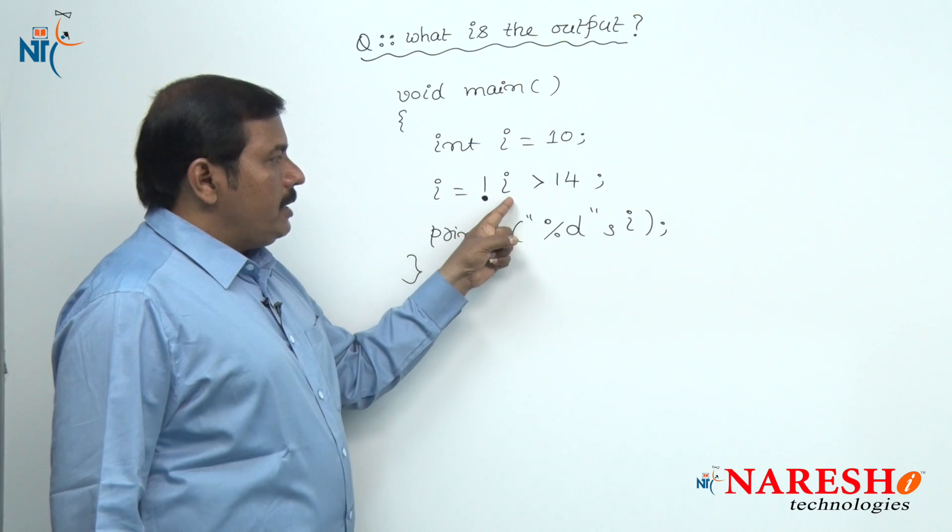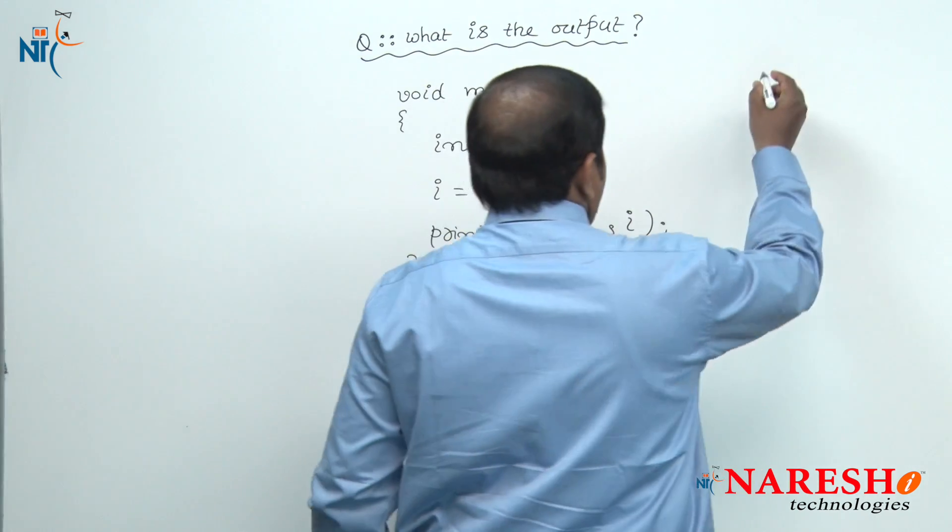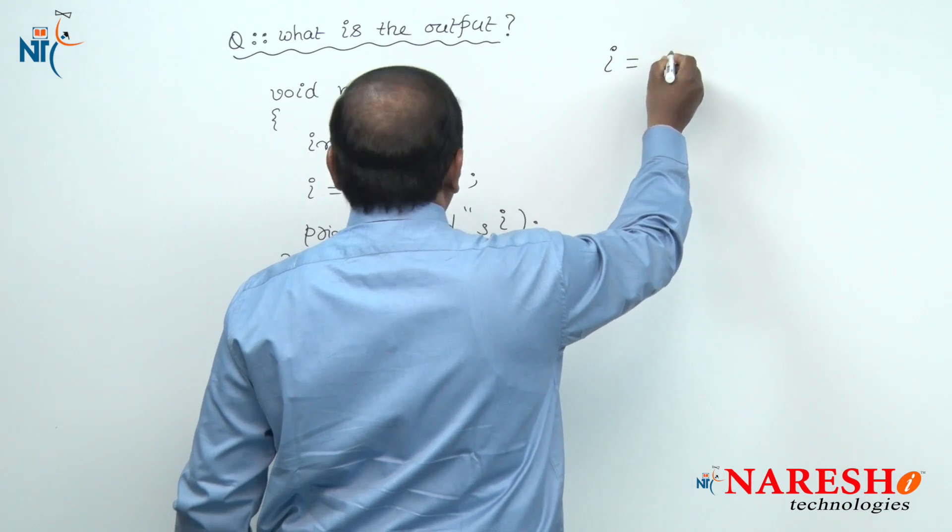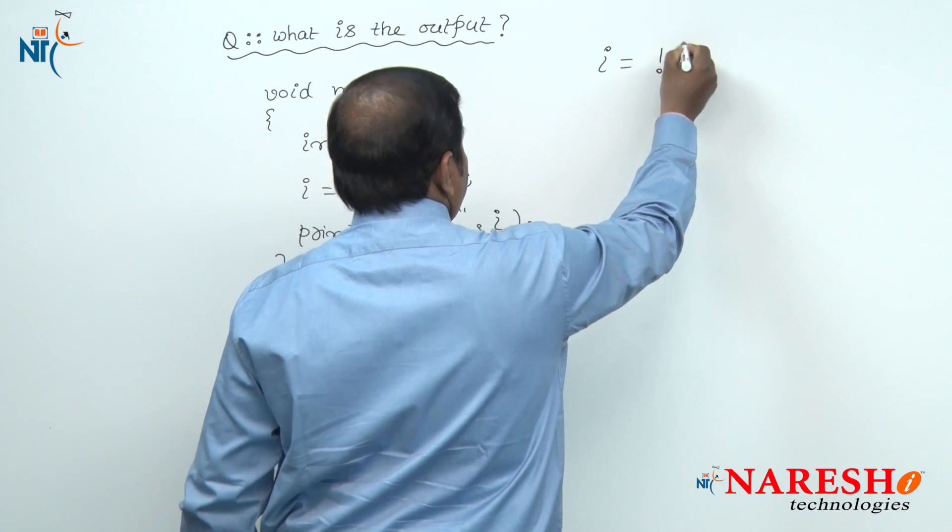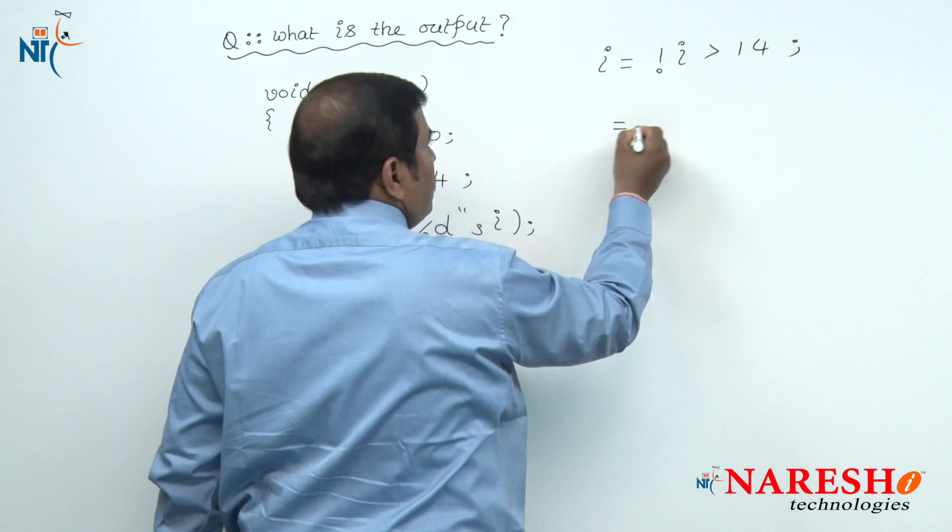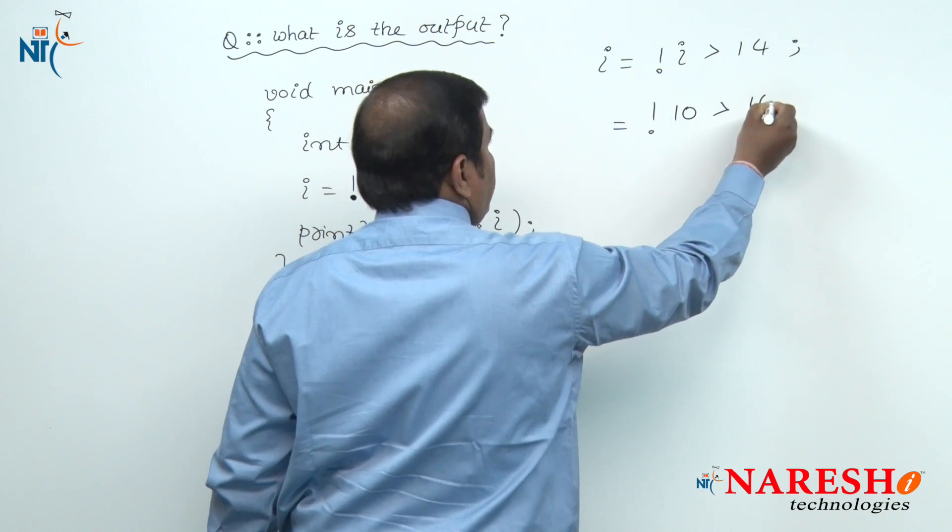not i is greater than 14. Let us watch the evaluation of this expression: i is equal to not i is greater than 14. The given value of i is 10, greater than 14.